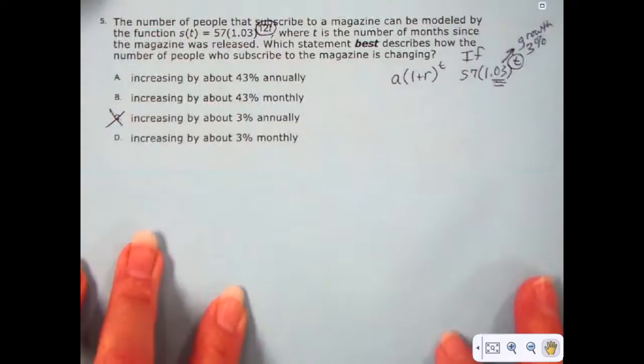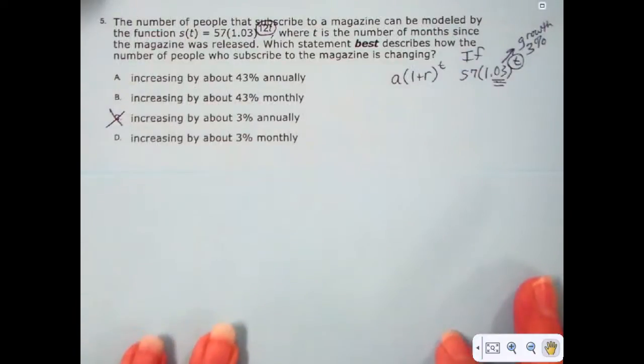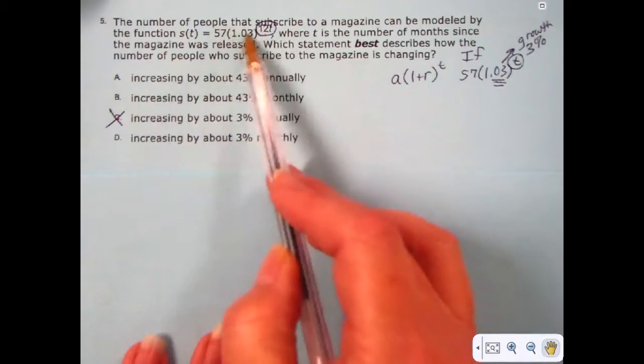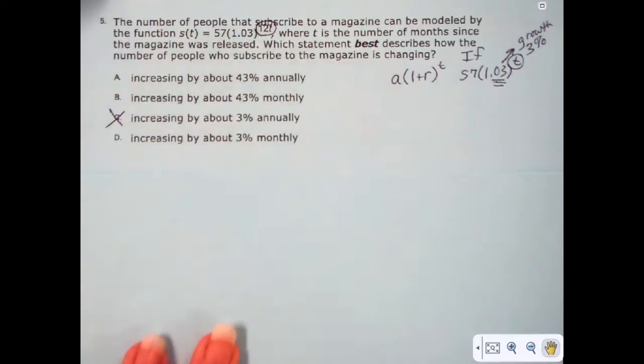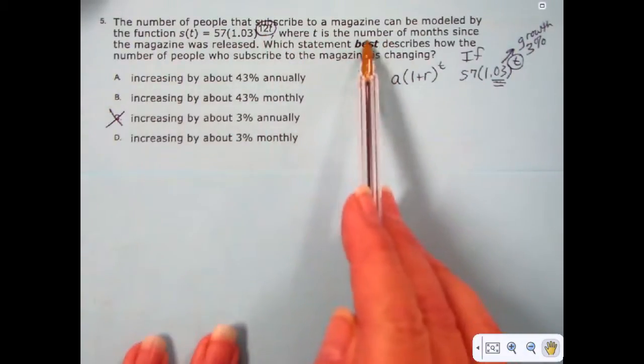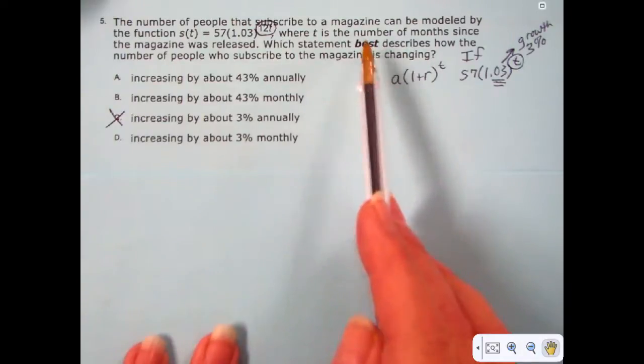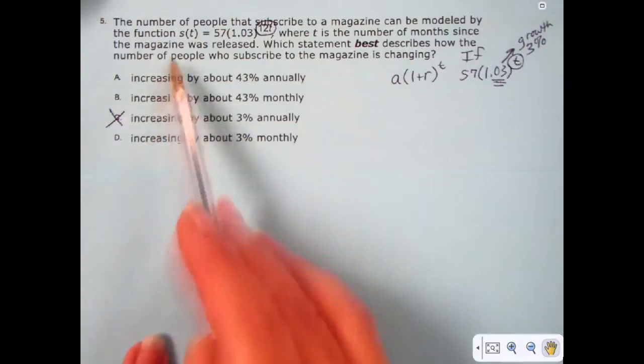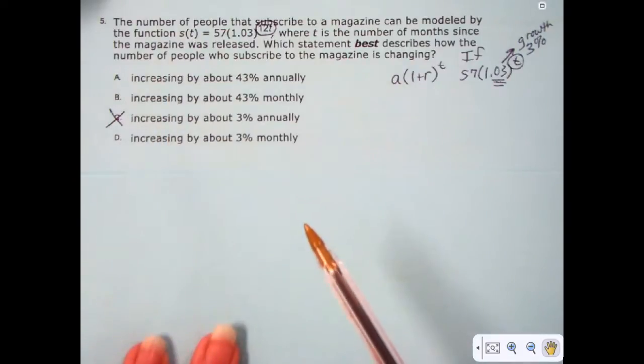Now, what you have to remember about doing this kind of problem is that this value, this 3% increase that is happening, is not happening every month. It's happening every 12 months. And because of that, we have to figure out what the actual increase is in another way.